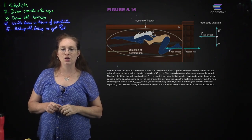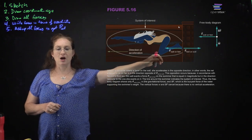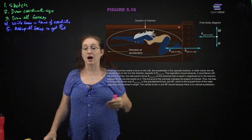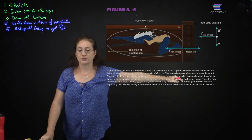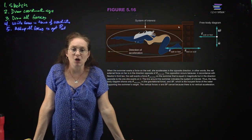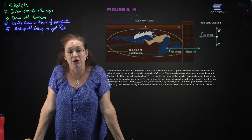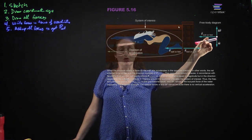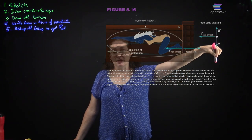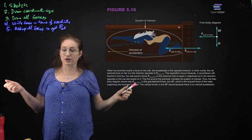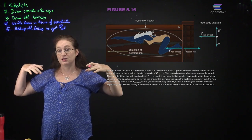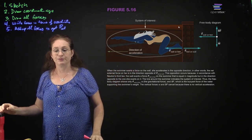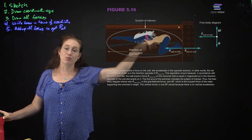Here you have a swimmer exerting a force on a wall and accelerating in the opposite direction. This is Newton's third law: when an object acts on something, it experiences an equal and opposite force. She pushes on the wall, so the wall pushes on her. For the swimmer's free body diagram there are three forces: her feet on the wall, her weight, and the buoyant force — the equivalent of the normal force in water — which counteracts gravity since she has no net vertical motion.